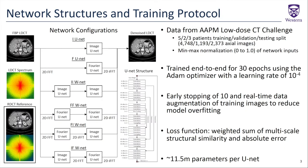The purpose of this work was to determine the optimal domain processing order for a dual-domain approach. As a baseline benchmark, we trained two single-domain U-nets: one operating in the image domain, called the I-Unet, and one in the spatial frequency domain, called the F-Unet. We additionally trained two cascades of U-nets, called W-nets, operating in only one domain — image-then-image or frequency-then-frequency. Finally, we trained our proposed dual-domain W-nets: the FI-Wnet, which first processes the spatial frequency domain then the image domain, and the IF-Wnet, which processes the image domain then the spatial frequency domain.